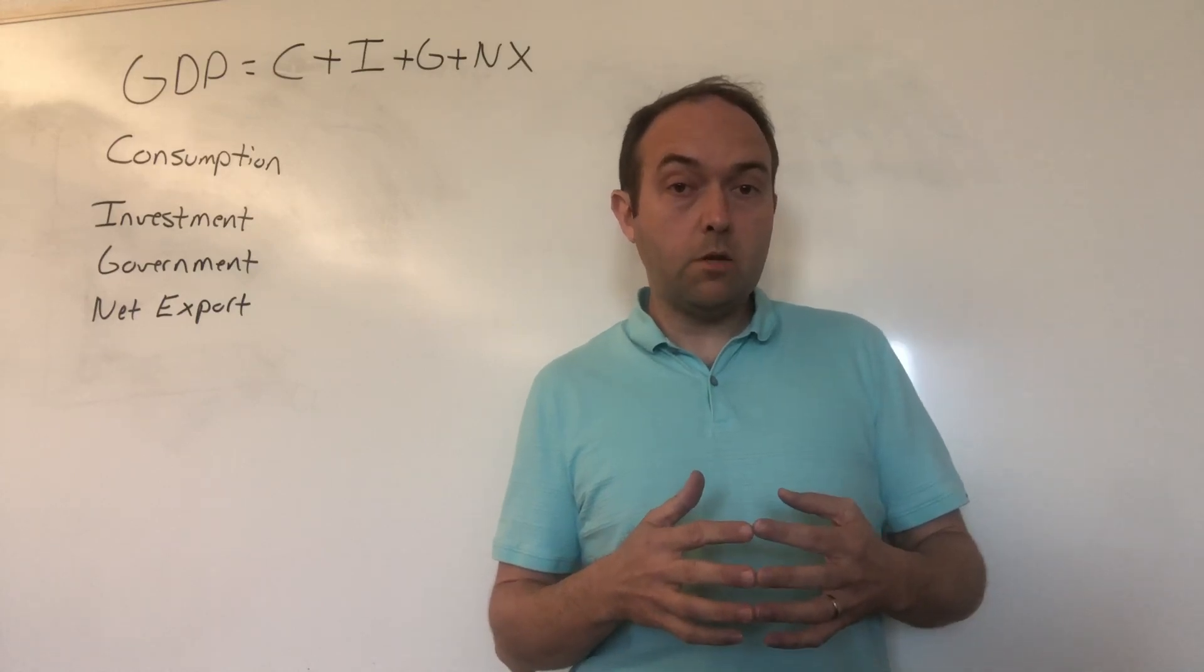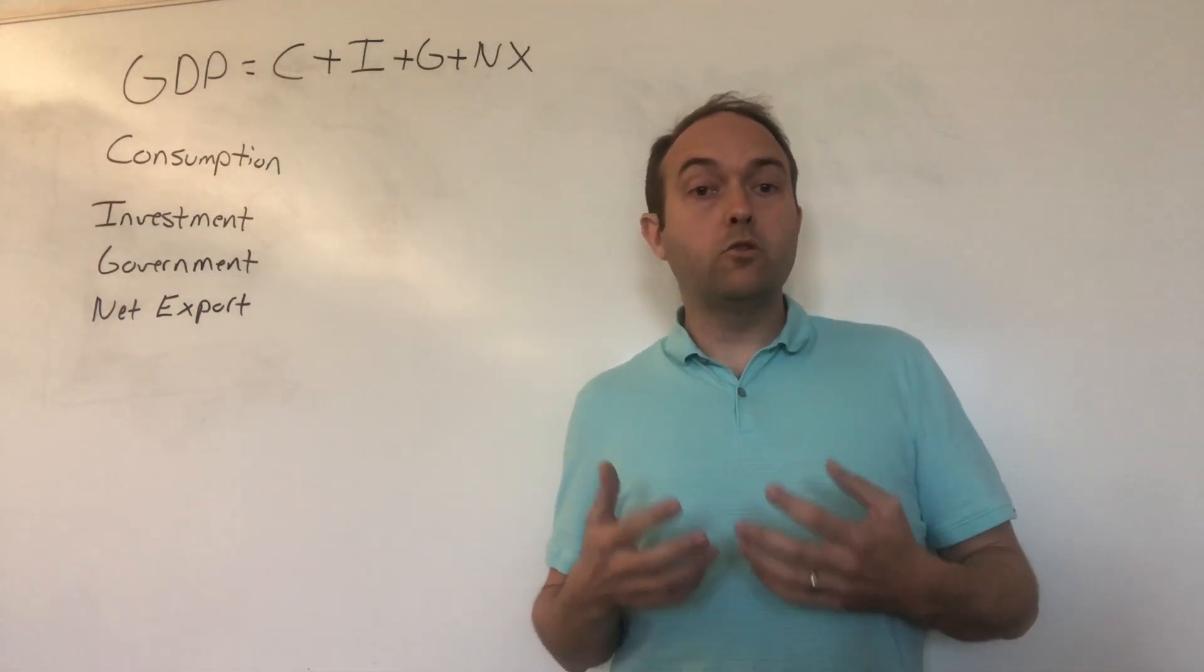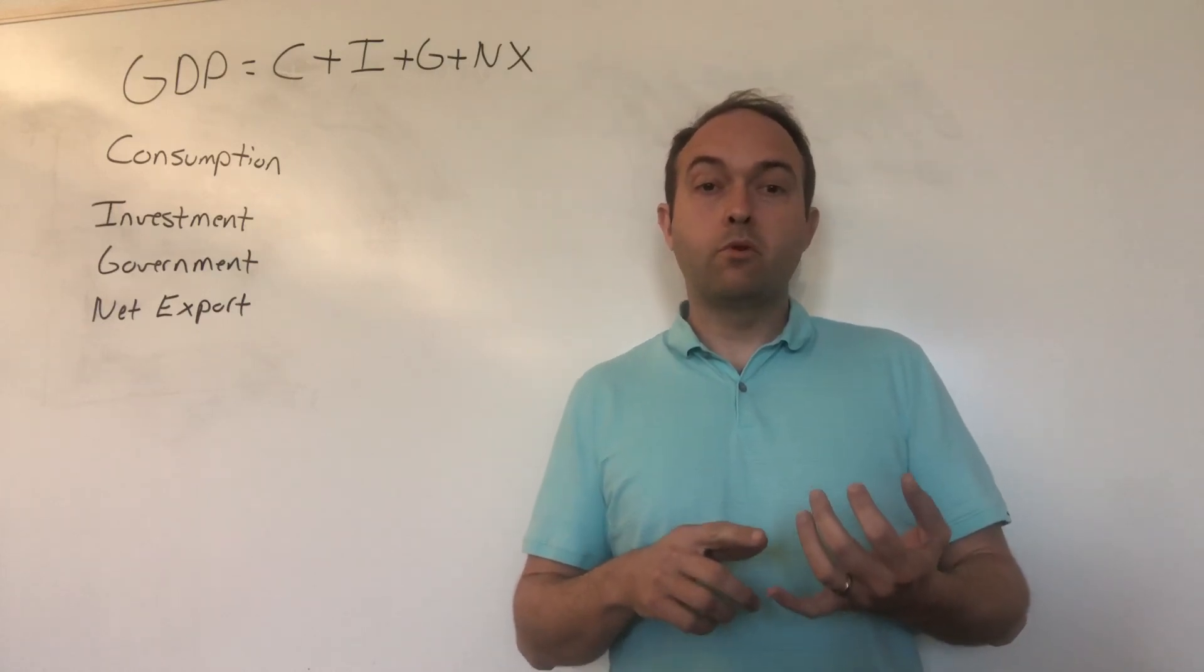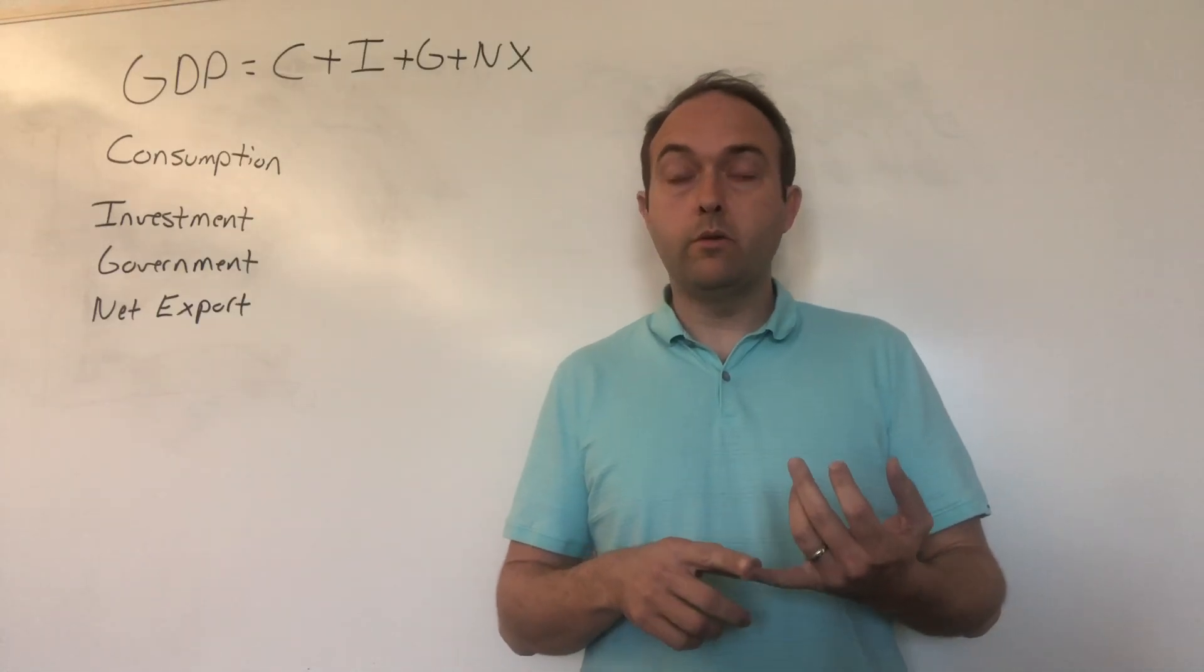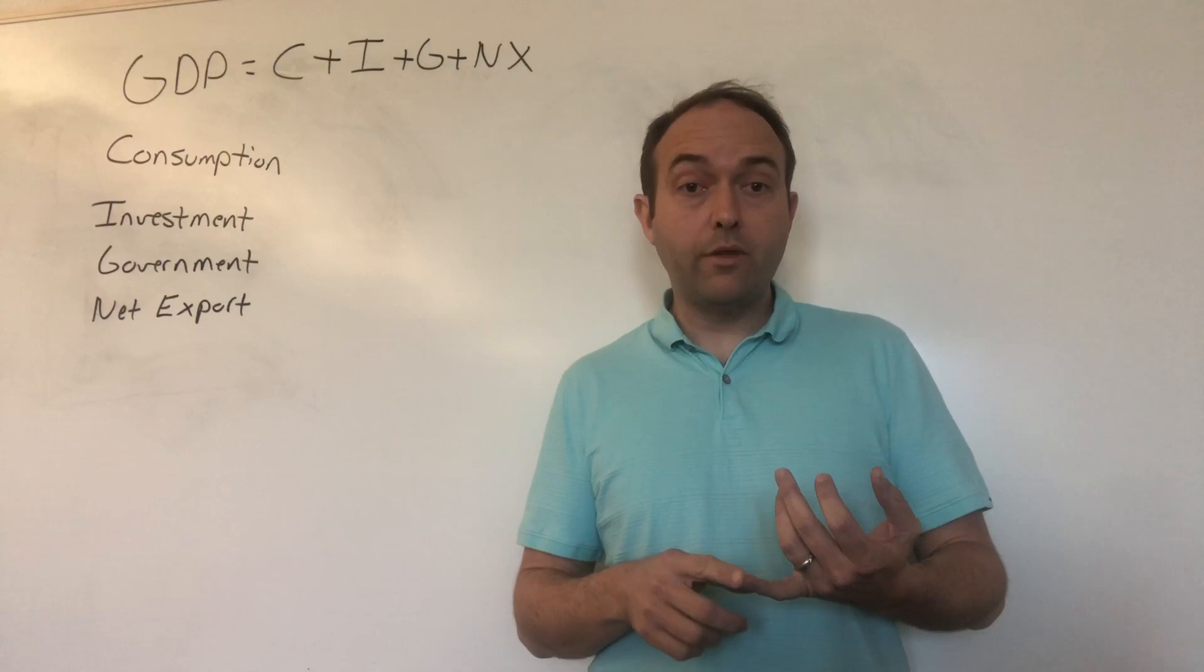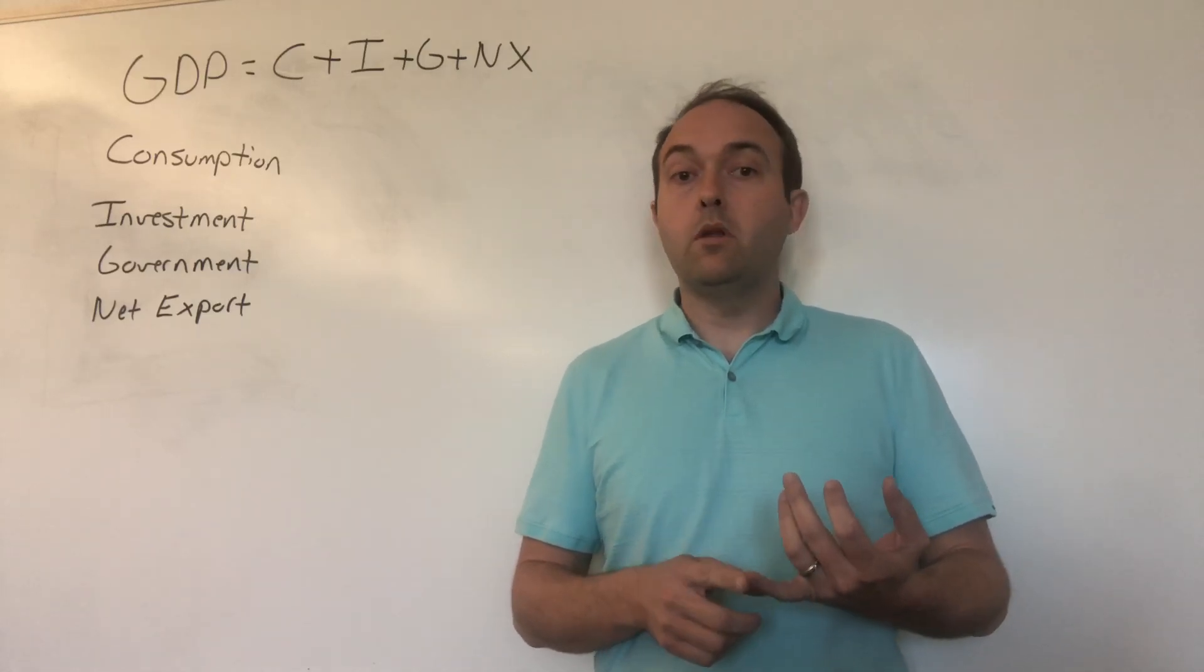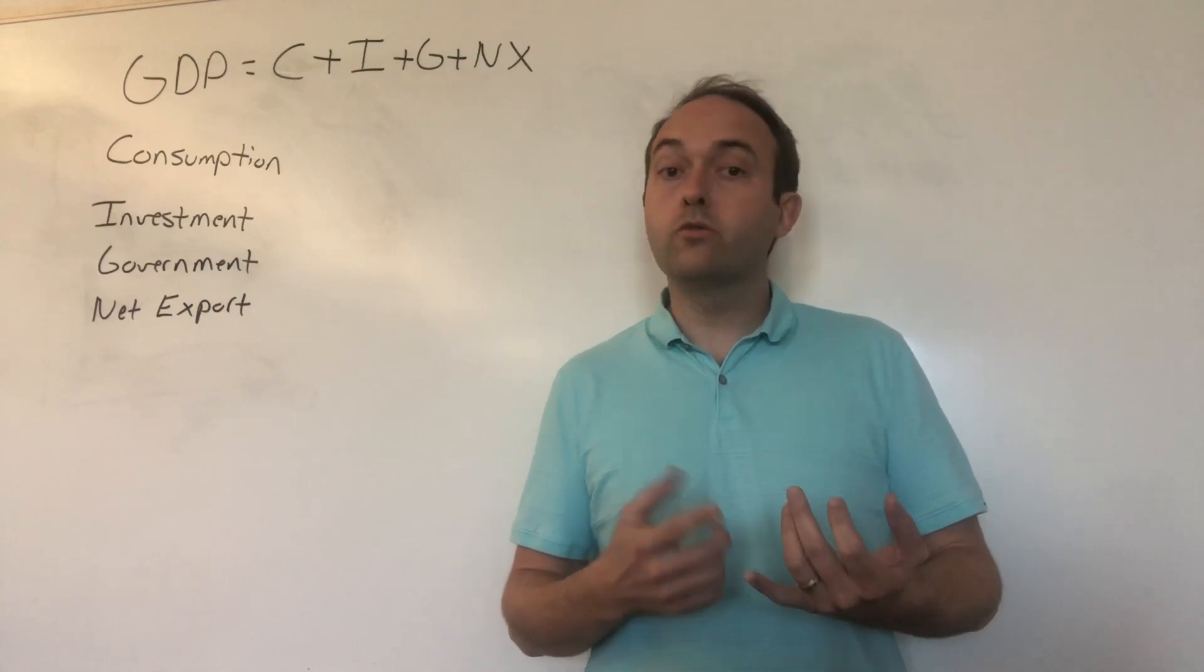The third component we'll look at is government services, or the G in C plus I plus G plus net exports. Government is measuring the value of all goods and services provided by the government, and that could be federal, state, or local government. The main thing is going to be health care. The federal government, most state governments, and some local governments spend a lot of money providing health care services to citizens. Another component is education. The federal government and most state and local governments spend a lot of money providing education, either K through 12 or supporting preschool education and higher education.